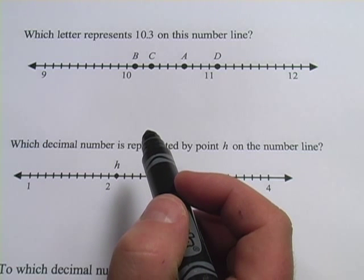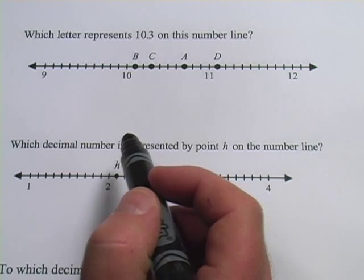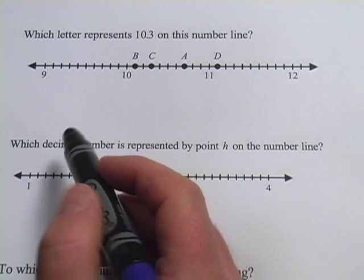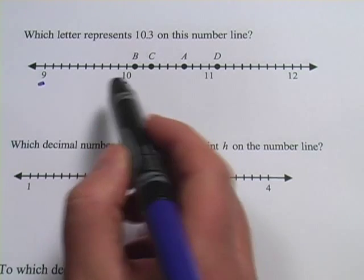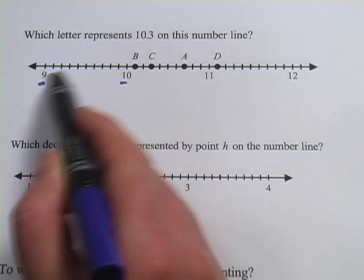In these problems, we're dealing with number lines. But this number line is maybe a little bit different than what you've seen before. Here's 9, here's 10, and there's all these hash marks in between.